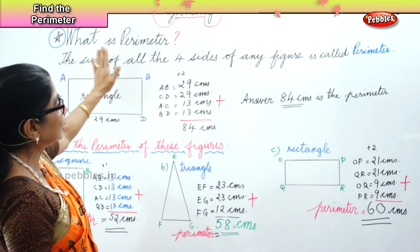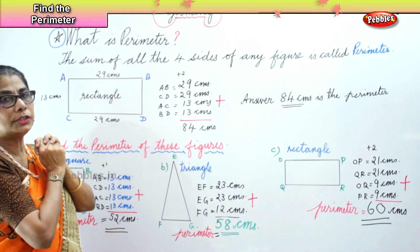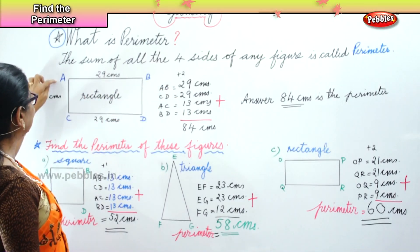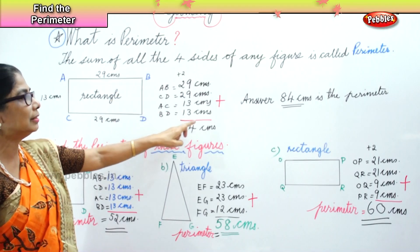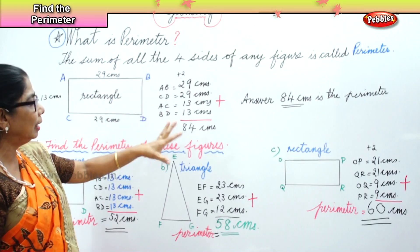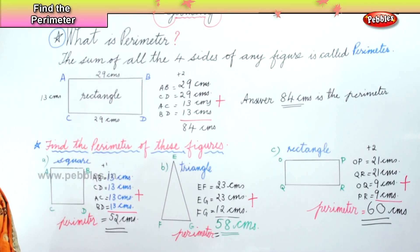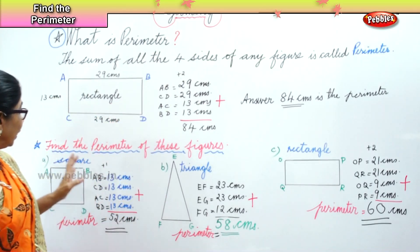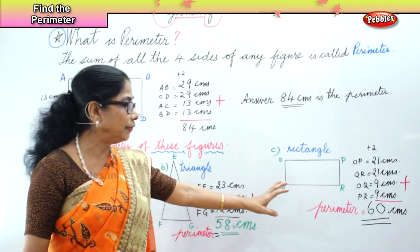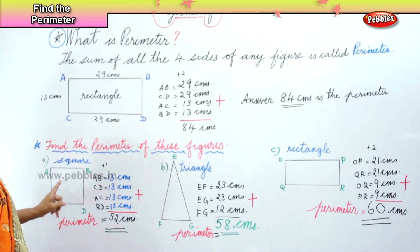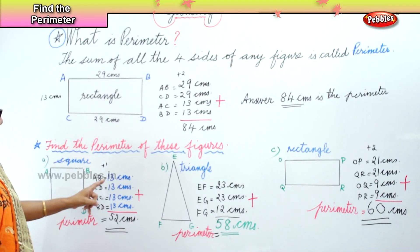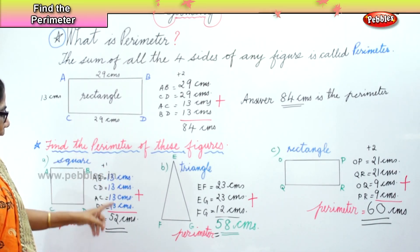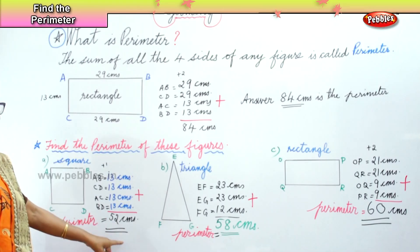What is perimeter? The sum of all the sides of any figure is called the perimeter. For this rectangle: AB equals 29 centimetres, CD equals 29, AC equals 13 centimetres, BD equals 13 centimetres — in a rectangle opposite sides are equal. When you add up all four sides you get 84 centimetres, so the perimeter of this rectangle is 84 centimetres. Now the square: all sides are equal — AB, CD, AC, BD are all 13 centimetres, and when you add up you get 52 centimetres.